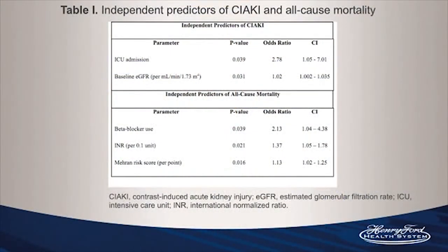ACS as an indication for coronary angiography was 46% in the CI-AKI group and 40% in the non-CI-AKI group. Independent predictors of CI-AKI were found to be ICU admission with an odds ratio of 2.78 and baseline GFR with an odds ratio of 1.02. No differences were found with regards to contrast volume, contrast ratio, or contrast to eGFR ratio. Independent predictors of mortality were identified to be pre-angiography beta blocker use with a hazard ratio of 2.13, INR with a hazard ratio of 1.37, and MELD risk score with a hazard ratio of 1.13.